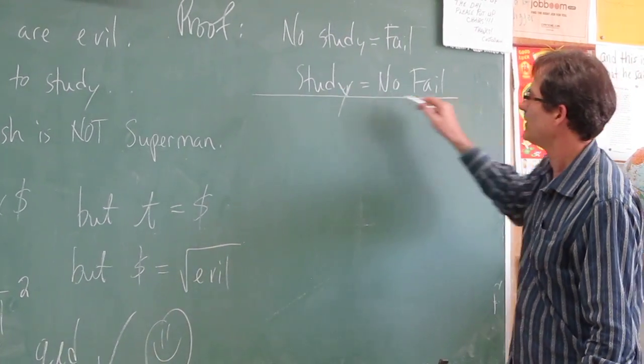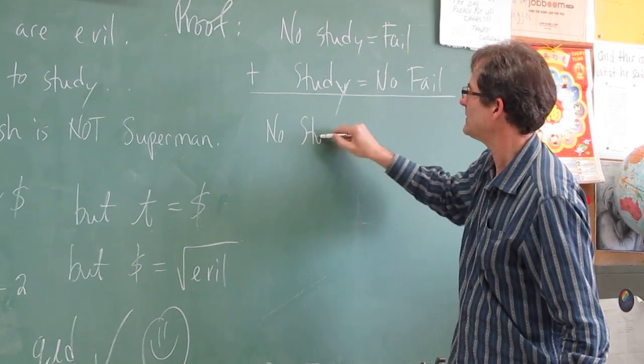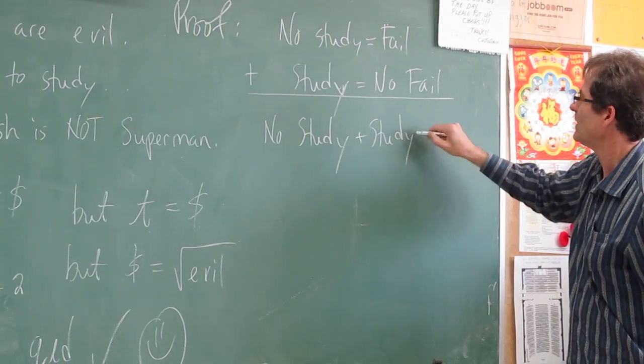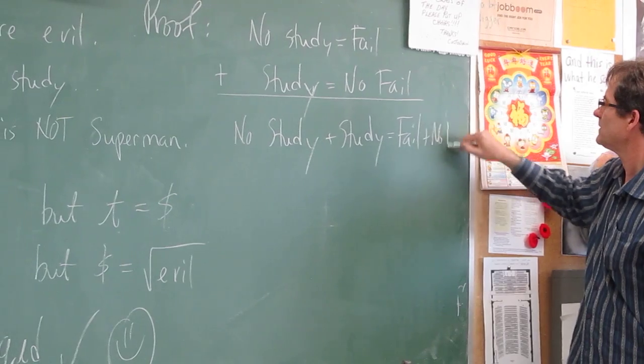If we add these two together, on the left-hand side we get no study plus study. On the right-hand side we get fail plus no fail.